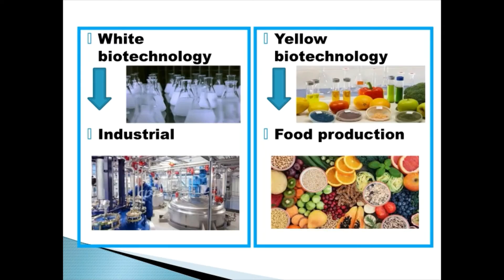White Biotechnology, also known as Industrial Biotechnology, is biotechnology applied to industrial processes. Whereas Yellow Biotechnology refers to the use of biotechnology in food production, for example making of wine, cheese, etc.